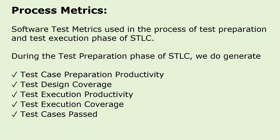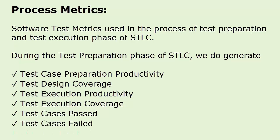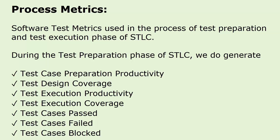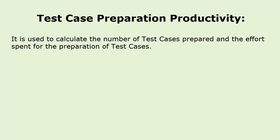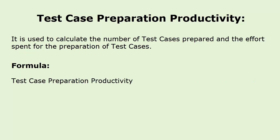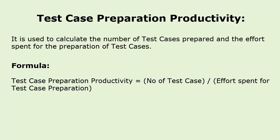The metrics generated during test preparation include: test case preparation productivity, test design coverage, test execution productivity, test execution coverage, test cases passed, test cases failed, and test cases blocked. Let's see them one by one. Test case preparation productivity is used to calculate the number of test cases prepared and the effort spent. The formula is: test case preparation productivity = number of test cases divided by effort spent for test case preparation. Here goes an example on test case preparation productivity metrics.